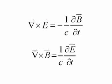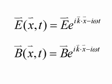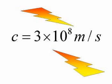A changing E produces B, a changing B produces E. Electromagnetic fields, oscillating electromagnetic fields, regenerating at the speed of light.